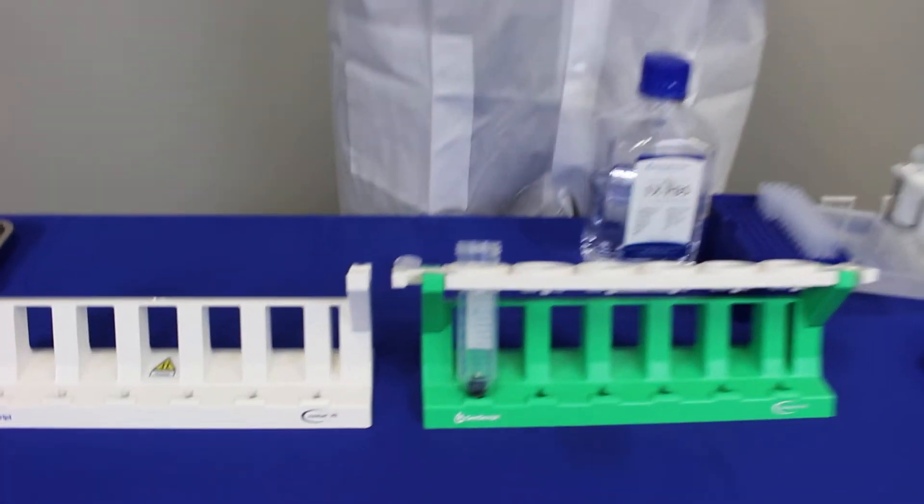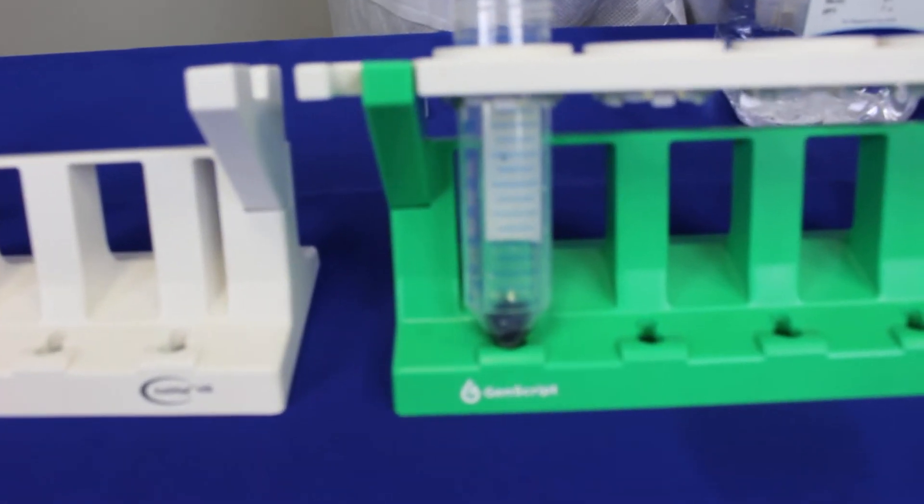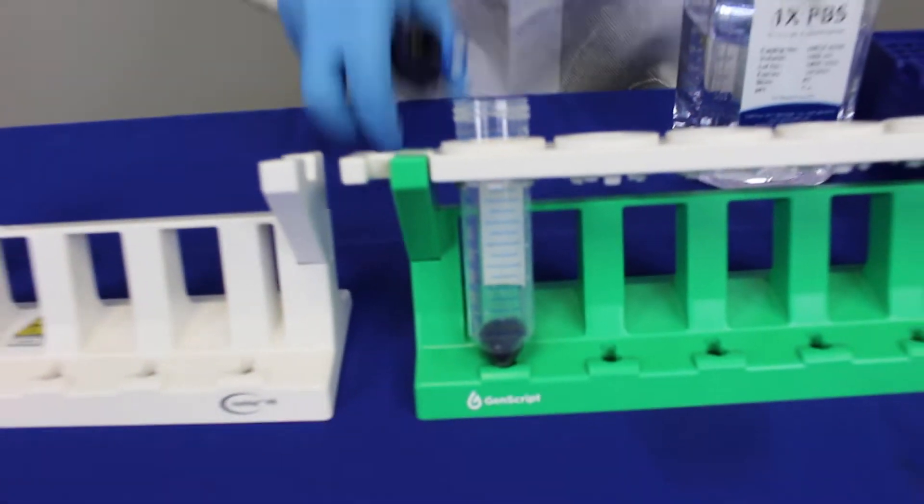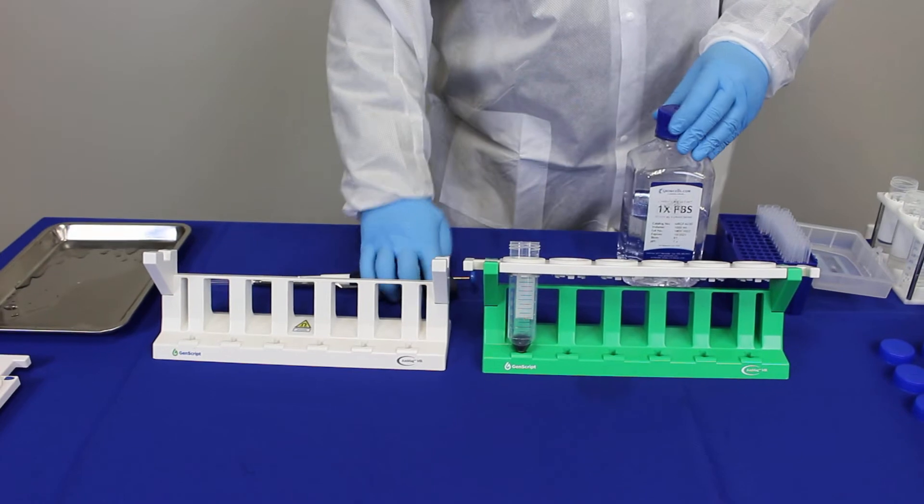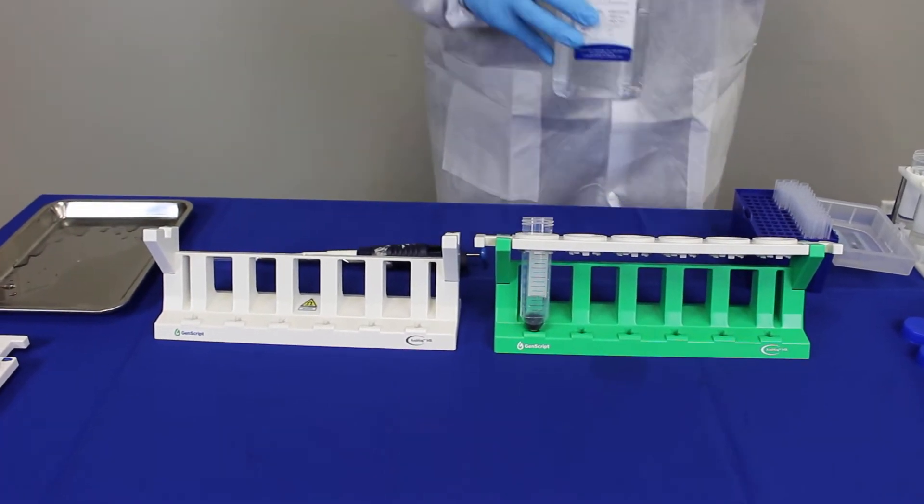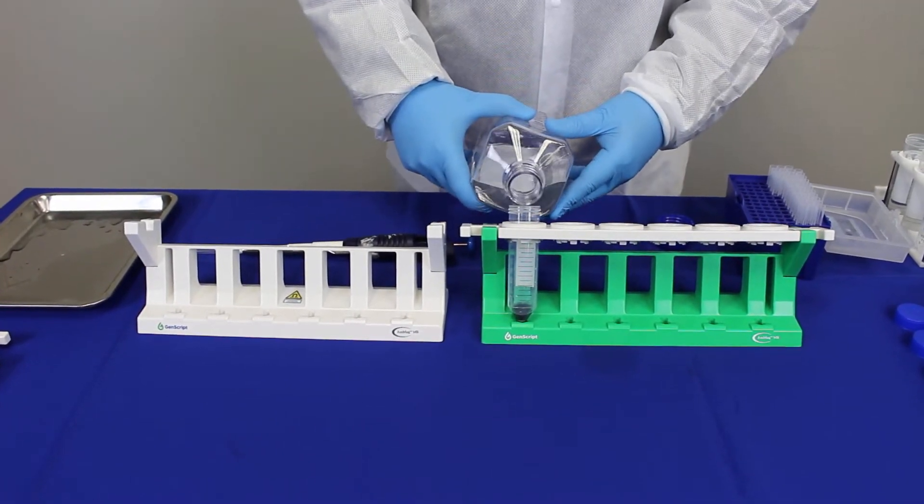Put them in a 50 ml tube, and then just use the PBS to wash them. The volume doesn't really matter.